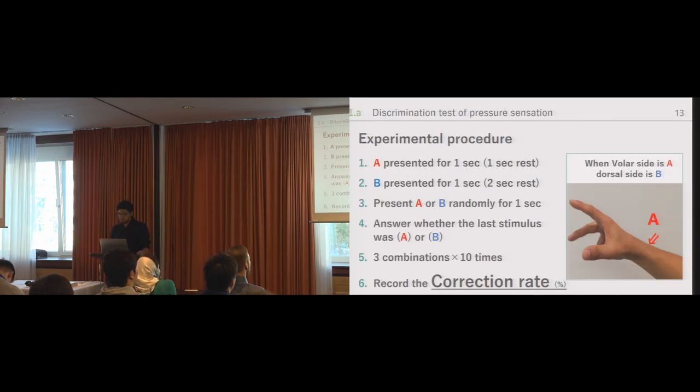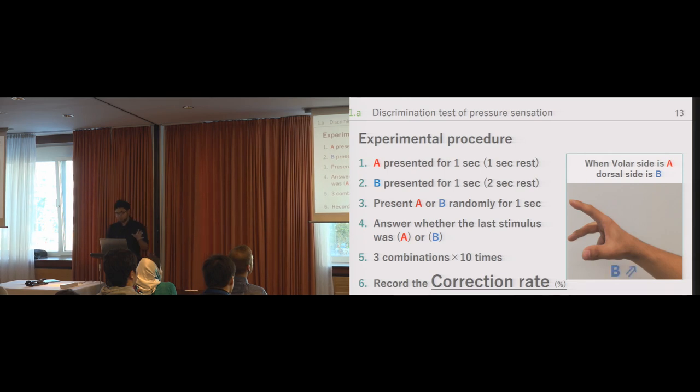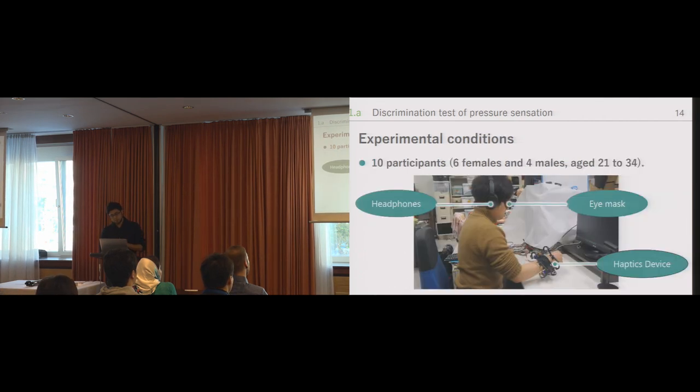In the pressure condition, all three places corresponding to the thumb, index, and middle finger were used and we tested whether each one of these stimulus from two pairs could be discriminated. Using stimulus pairs A and B, the following procedure was used to examine the discrimination ability. A was presented for one second followed by one second rest and A or B was presented randomly and the participant was asked whether the last stimulus was A or B. Then we recorded the correction rate. There were 30 trials conducted in this experiment randomly and during the experiment the device was attached and the participant's sight was blocked using an eye mask and white noise was played through the headphones to mask the noise of the servo motors.